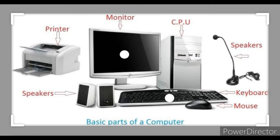Aaj hum dekhenge computer ke kaun-kaun se parts hote hain. So computer ke basically parts hote hain: ek toh hota hai monitor, doosra hai CPU, third keyboard, fourth mouse, fifth speakers, and sixth and last printer. Toh yeh saare jo humne dekhe woh computer ki parts hain.